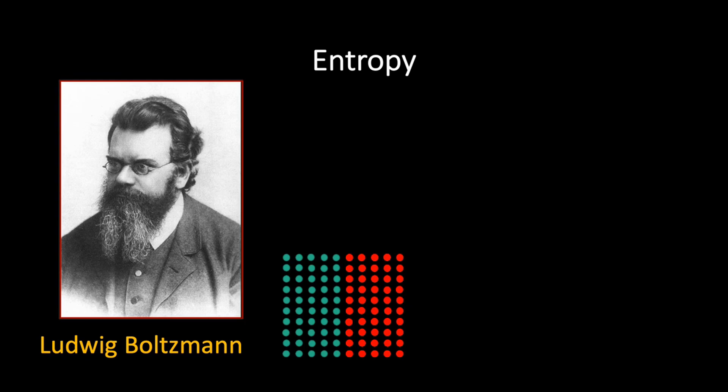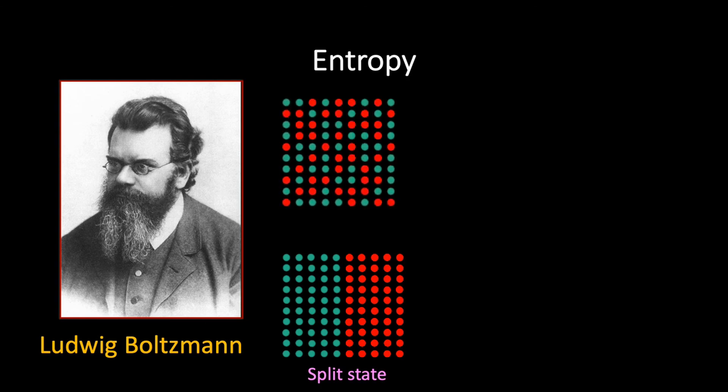If we then shook the box of marbles so that the two sets of marbles became thoroughly mixed together, we would see a random arrangement of the marbles, which we might label as a mixed macrostate.